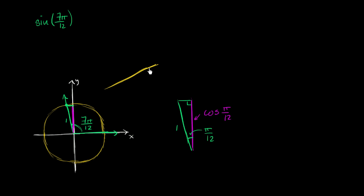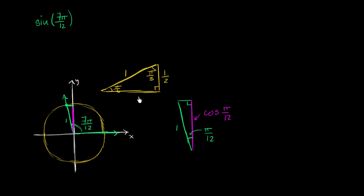A 30-60-90 triangle, written in radians, has angles π/6 and π/3 with a right angle. If the hypotenuse is 1, then the side opposite π/6 is 1/2, and the side opposite π/3 is √3/2. We've used these triangles to figure out the sine or cosine of π/6 or π/3.